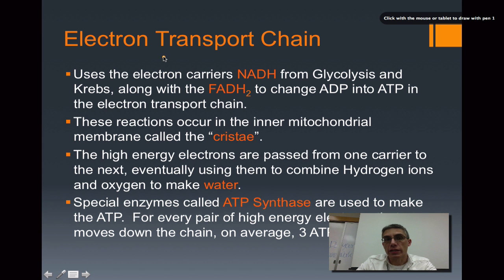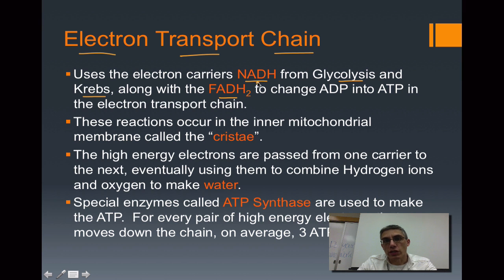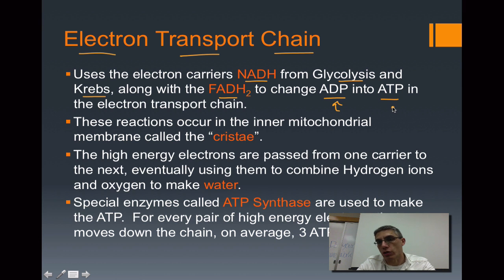The final process in cell respiration is the electron transport chain. The electron carriers NADH and FADH2 from glycolysis and the Krebs cycle carry high-energy electrons — which represent energy — to help change ADP into ATP. We use that energy to add a phosphate onto ADP to create ATP, so the cell can use that ATP to power various life processes.